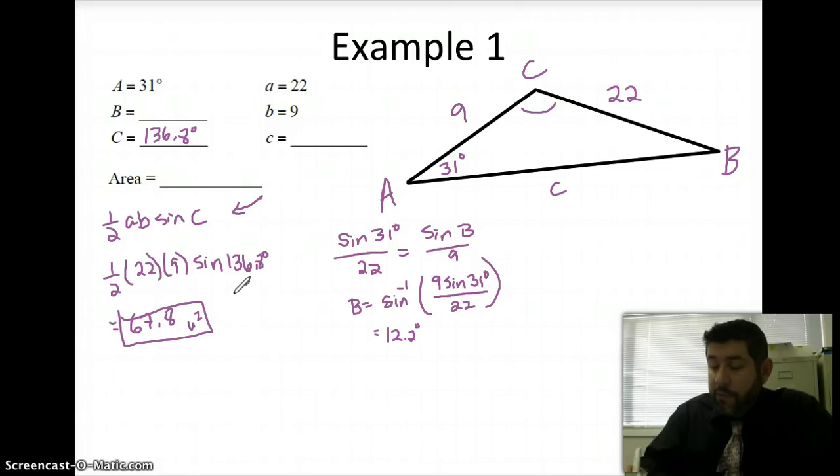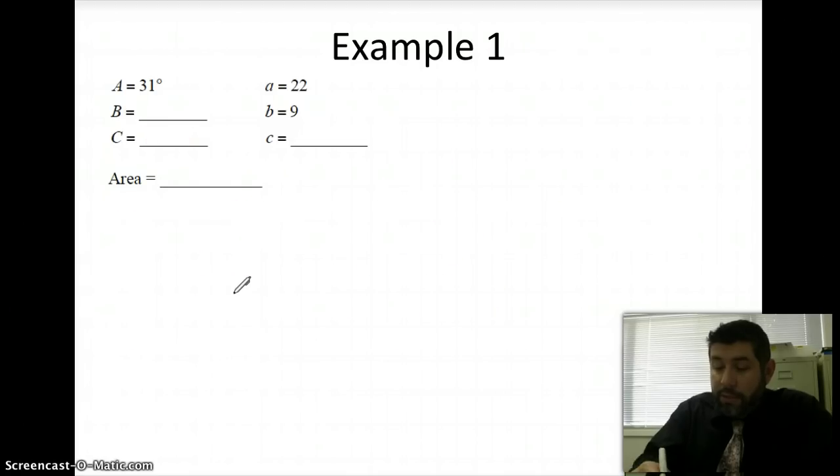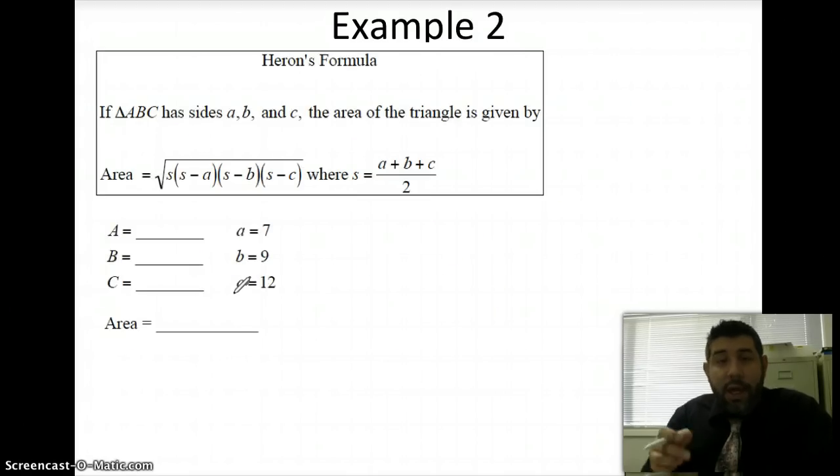So let's take a look at a different formula. Sometimes we have all three sides. And we want to use, we have a formula we can use for all three sides and no angles. It's called Heron's formula. So Heron's formula, what we would need to do is find the semi-perimeter, which is half of the perimeter. And we plug it into this square root formula.